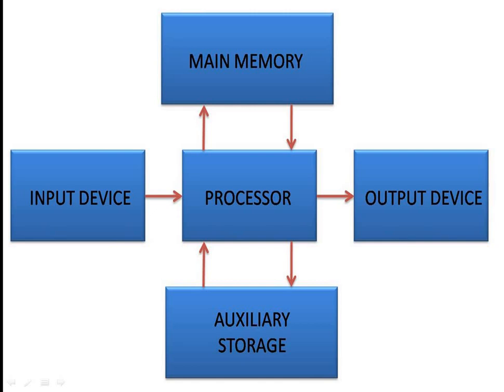When data goes to the processor, the processor processes it and finally displays the movie on the output device. This is how auxiliary memory links data through the processor to produce display output. Similarly, input from input devices is fetched from memory, processed, and displayed to the user.